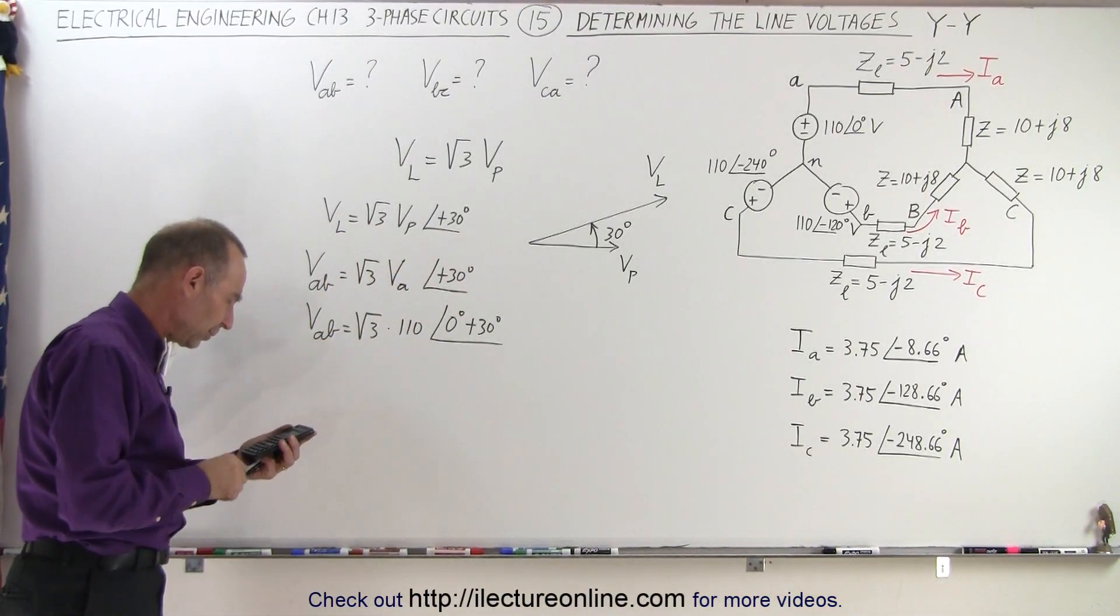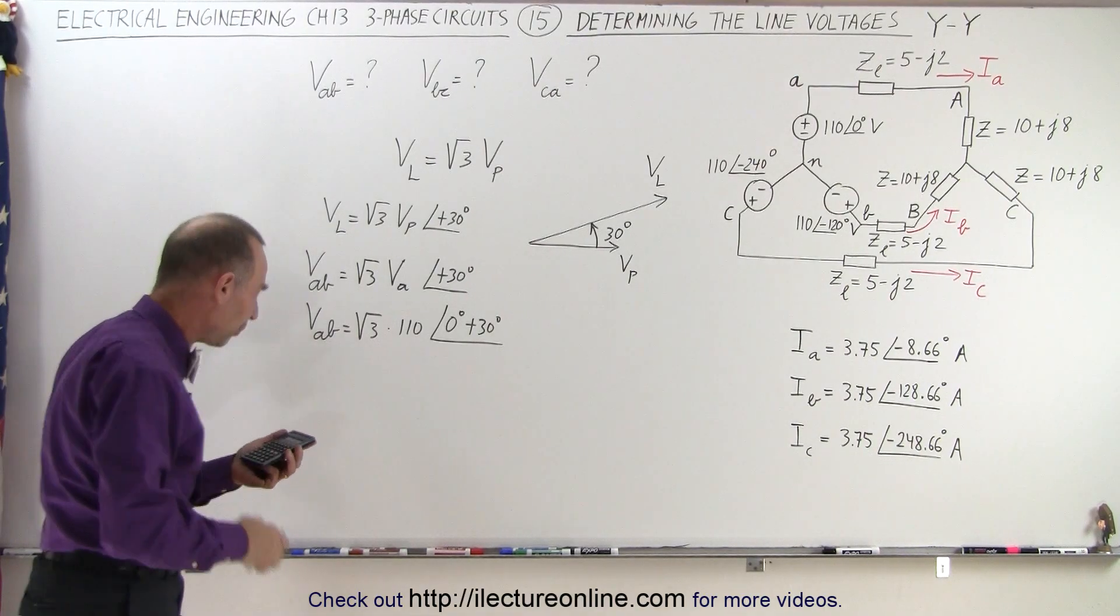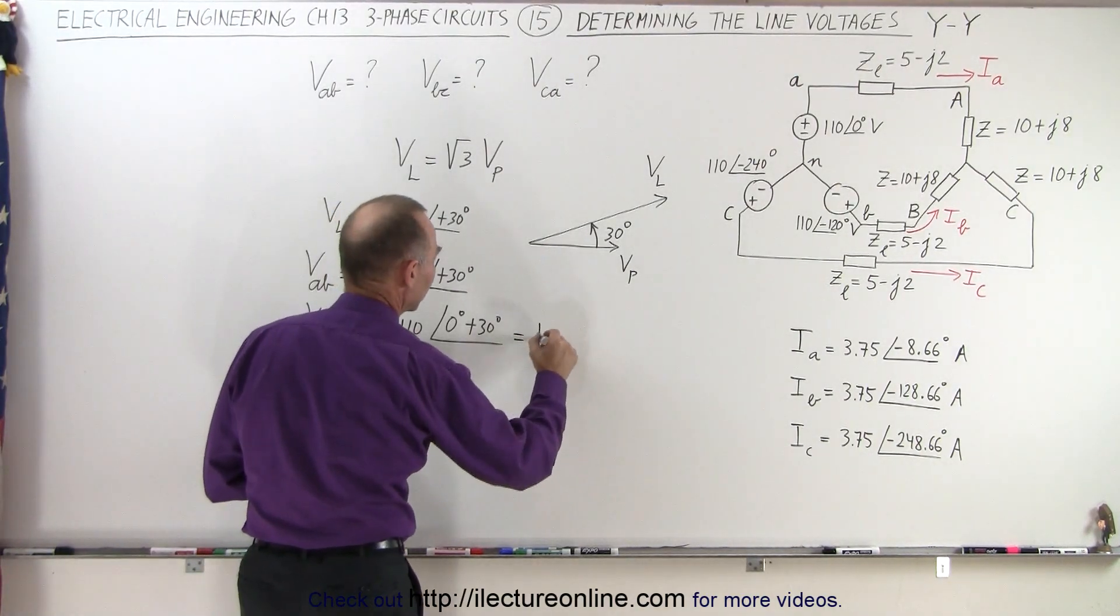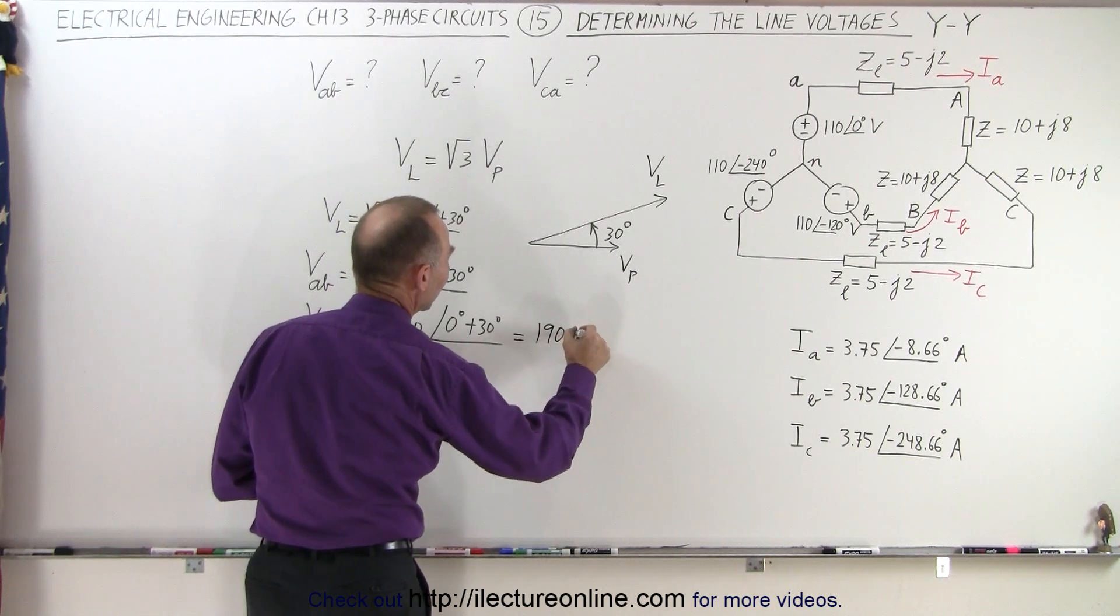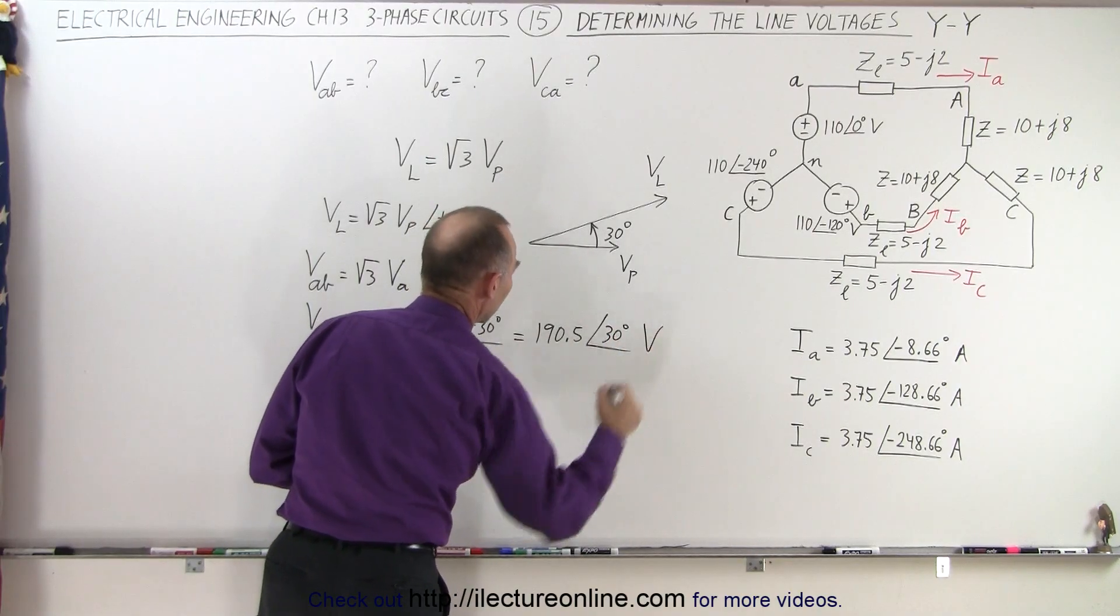So the square root of three times 110 gives us 190.5. So that's equal to 190.5 volts with a phase angle of 30 degrees.